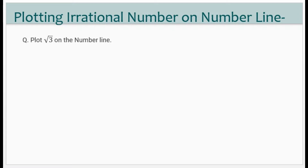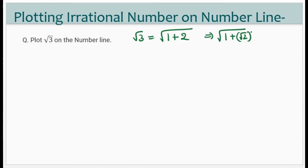Now let us try another question. What is different here? The previous question for root 5, we could easily write as 1 + 4, a sum of perfect squares. But how can we split root 3? We can write 3 as 1 + 2, but 2 is not a perfect square. So for root 3, we use 1 and root 2. We can write root 3 as the square root of 1 squared plus root 2 squared. First we draw root 2, then with its help we draw root 3.